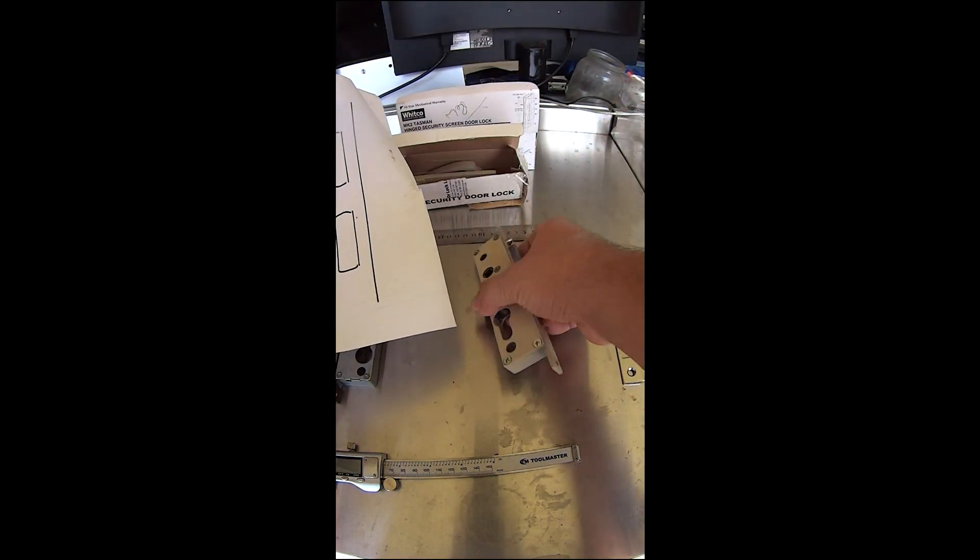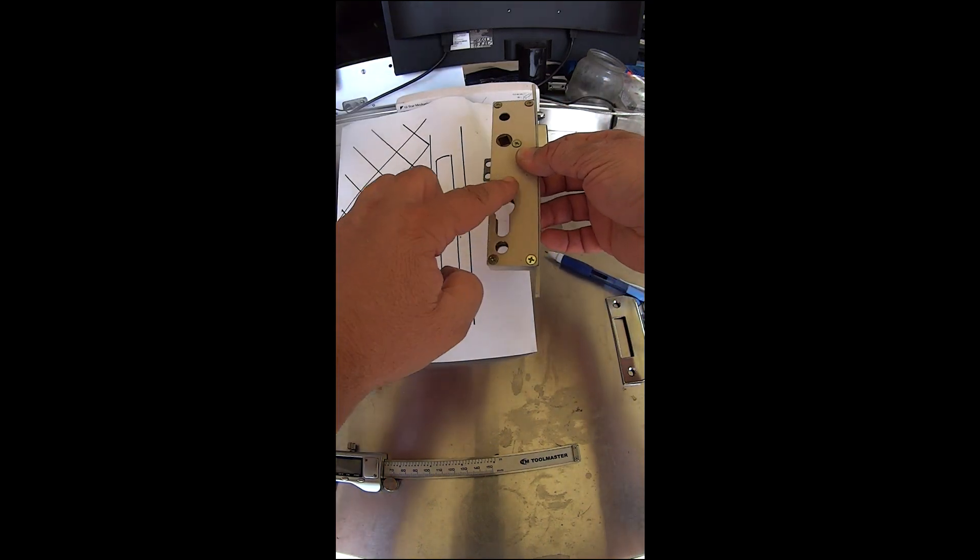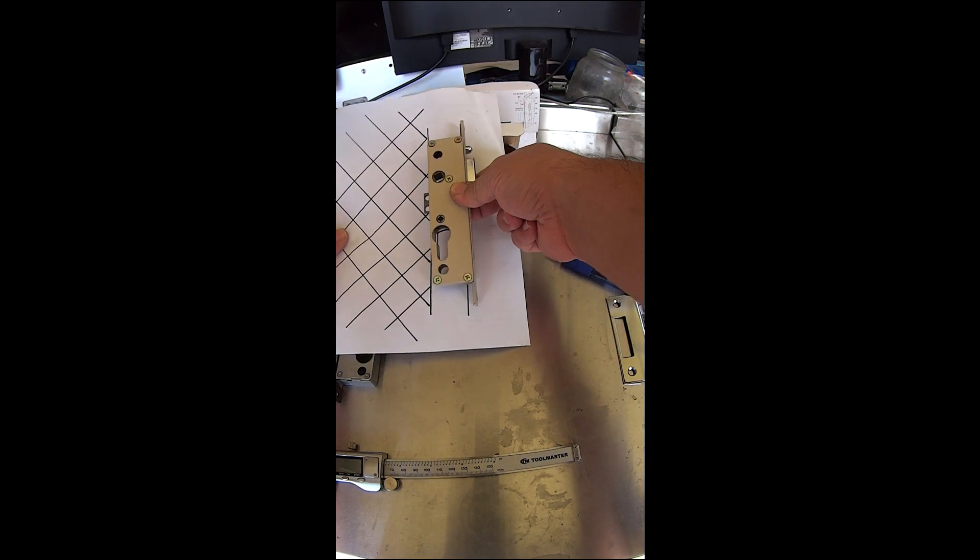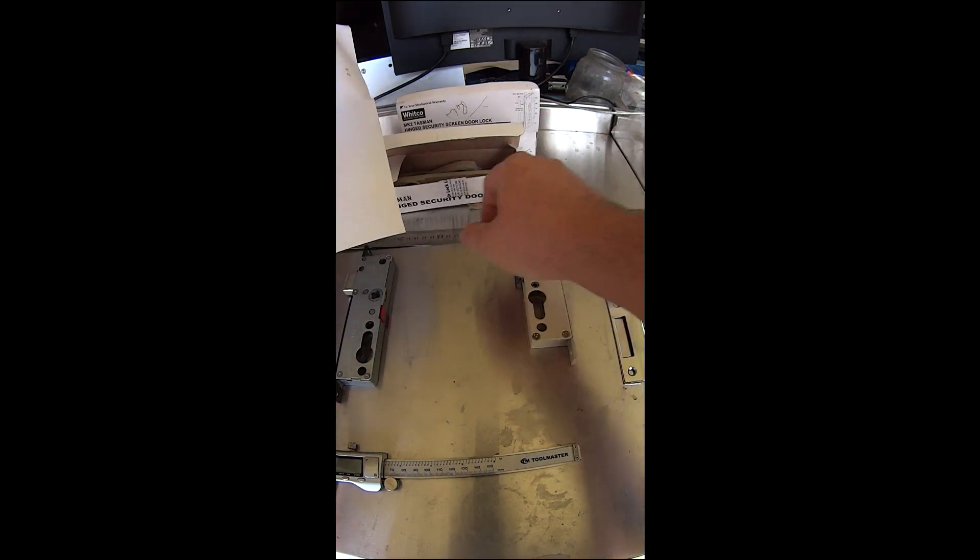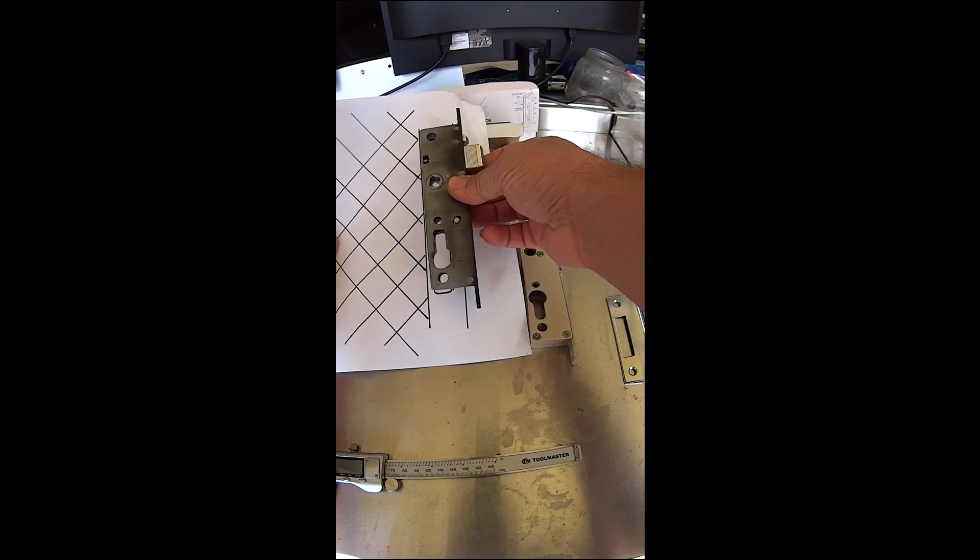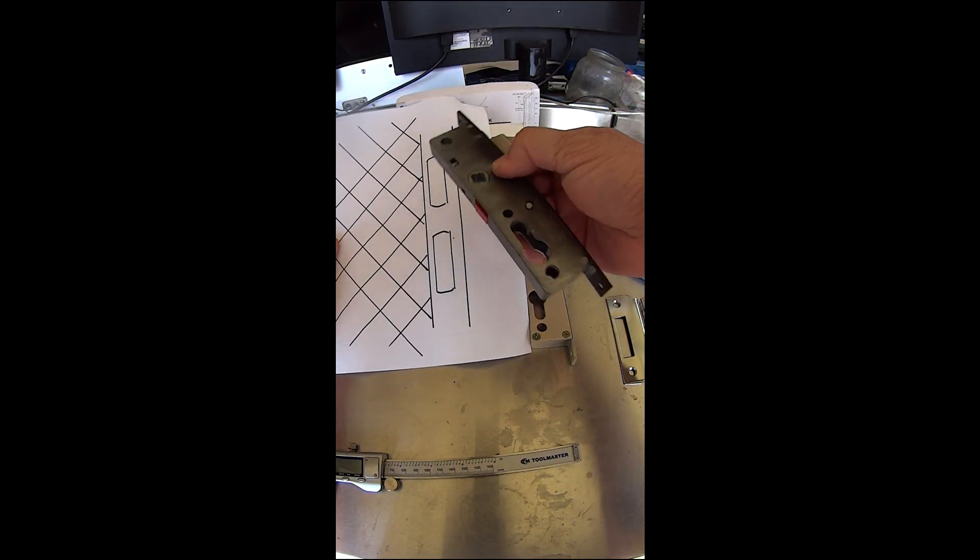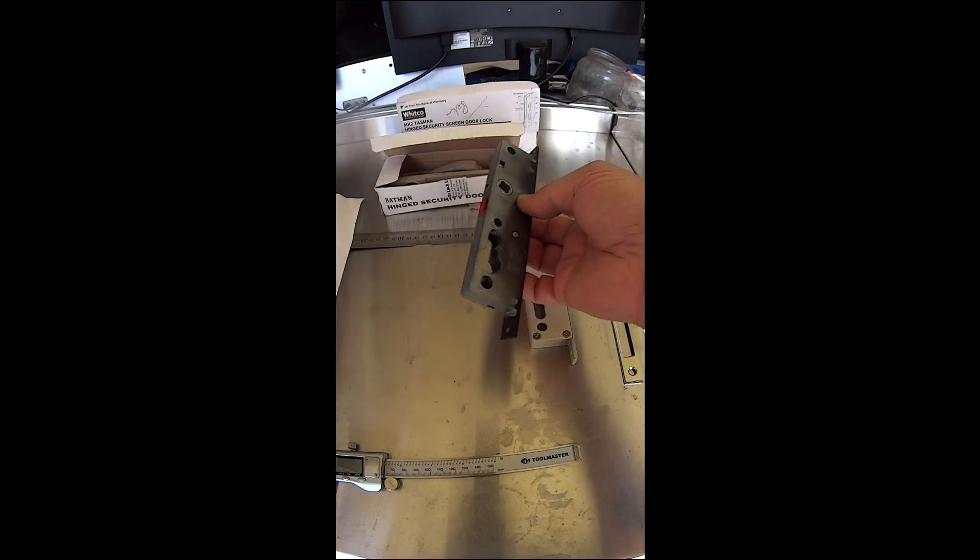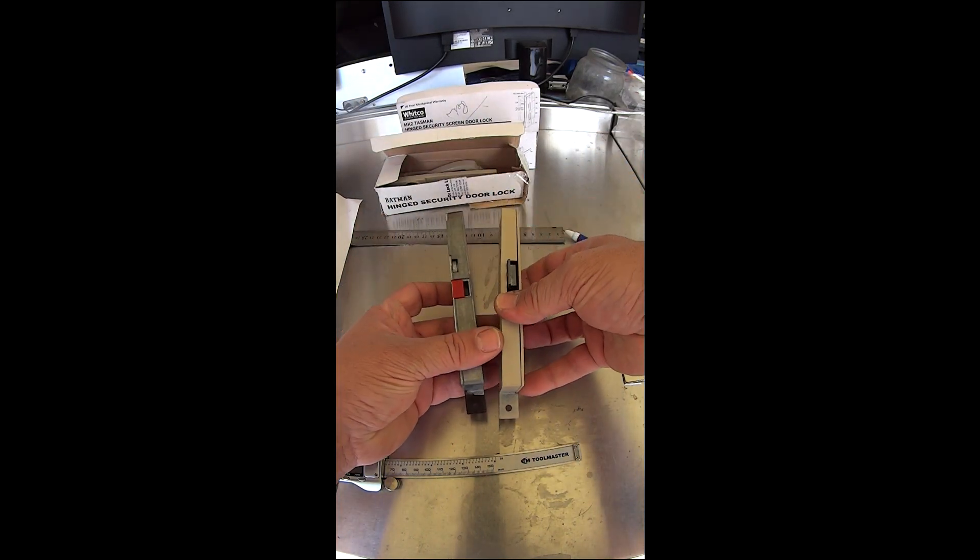On the actual door, most of the time this bottom cutout is for this cylinder section here and then the top section will be for the top one. When you're using a Witko in place of a Batman you might find that you need to adjust it here or a little bit of adjustment here. As far as width on the lock they are the same width.